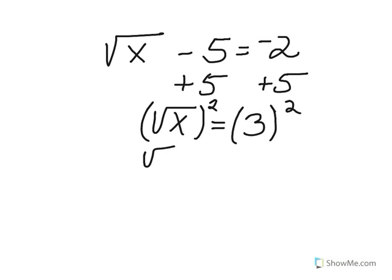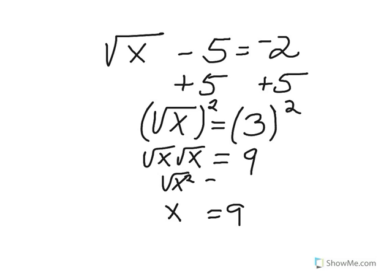The square root of x squared is the same as the square root of x times the square root of x, which is equal to the square root of x squared. The square root of x squared, using our rule with the index dividing into the exponent, is just x. 3 squared is 9. Therefore, x equals 9.